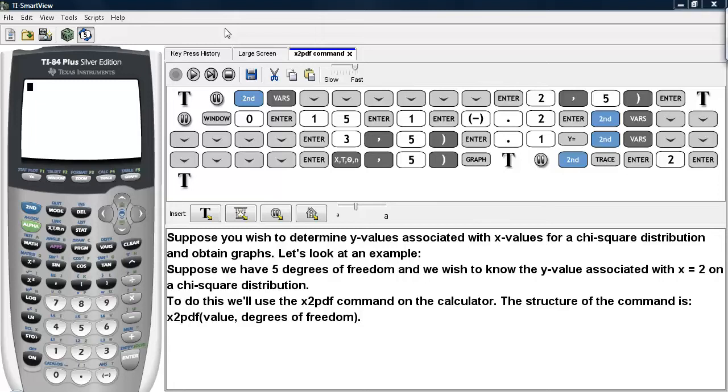To do this, we will use the chi-square PDF command on the calculator. The structure of the command is chi-square PDF, then the value, then a comma, and then the degrees of freedom. Then you can close up the command with a parenthesis.